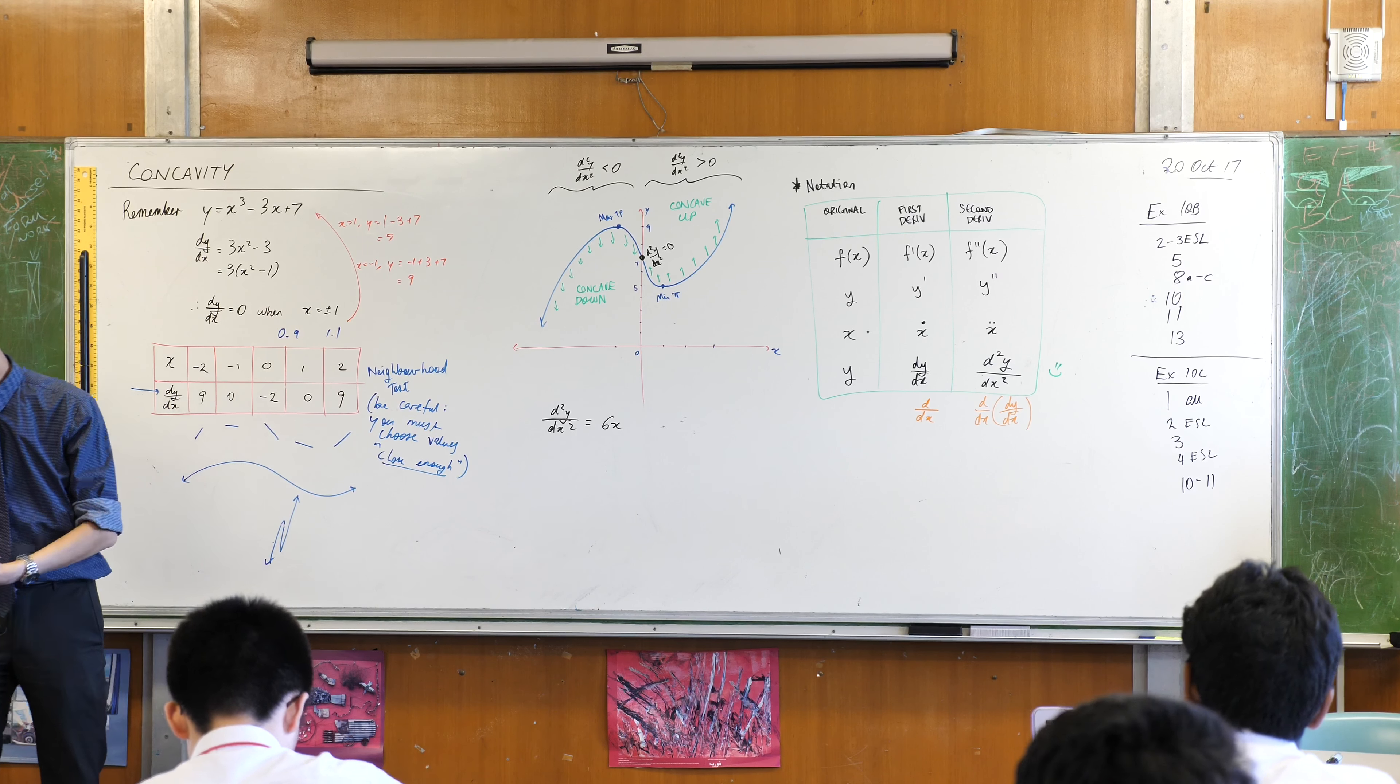But when you go to the second derivative, if you differentiate again, the sign of the second derivative, d squared y on dx squared, based on positive or negative. Positive means this guy, concave up, facing upwards. Think of like a cup, this cup can hold water because it's facing upwards, okay? So this is concave up.